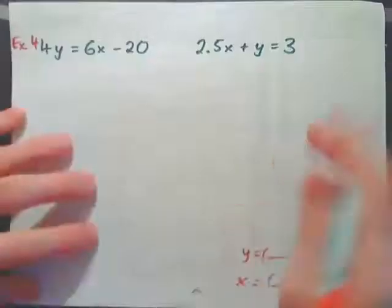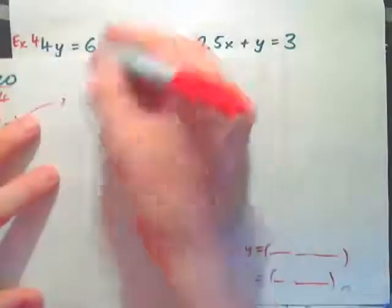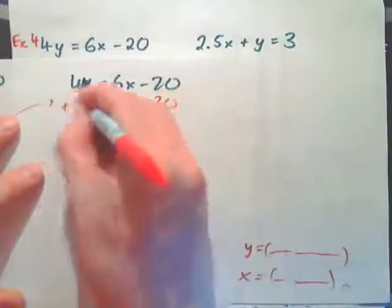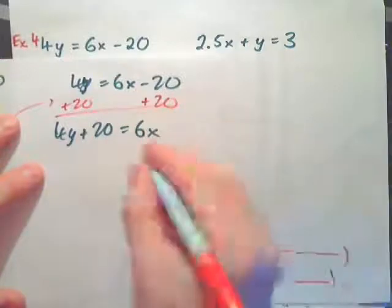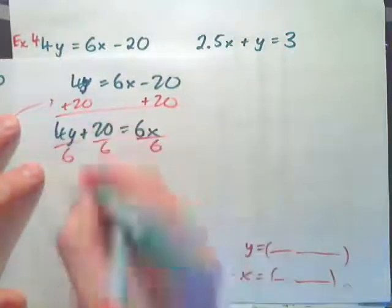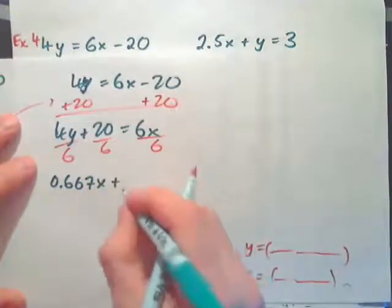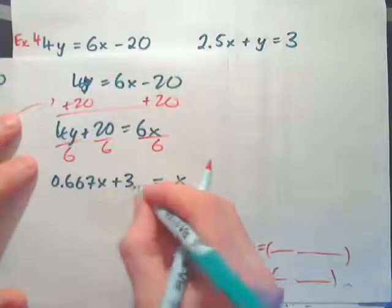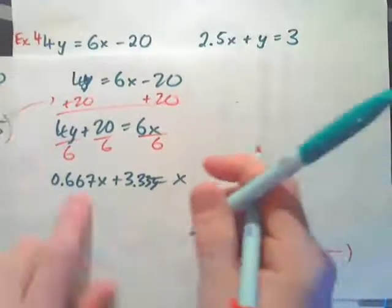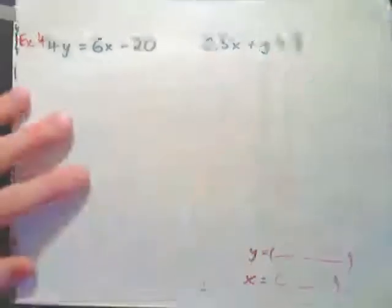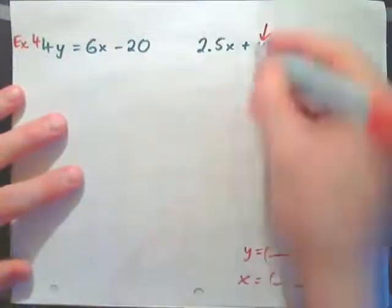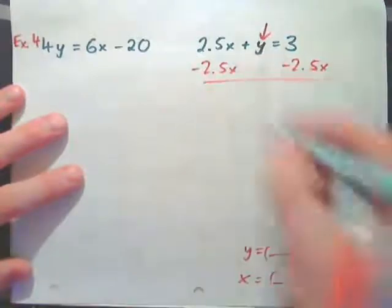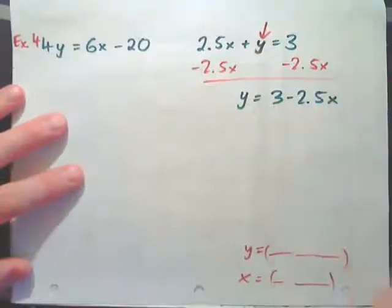Another option is to get x by itself from the first equation — but dividing by 6 gives messy decimals like 3.333. The easiest way is to look for a variable already nearly isolated. In the second equation, y only needs 2.5x subtracted from both sides: y equals 3 minus 2.5x. That's the quickest approach. You can also write this as y equals negative 2.5x plus 3 — they're the same thing.